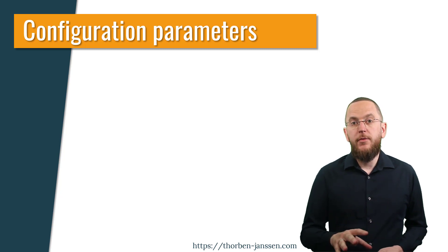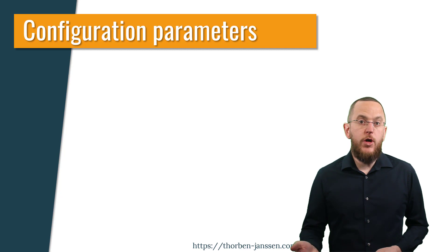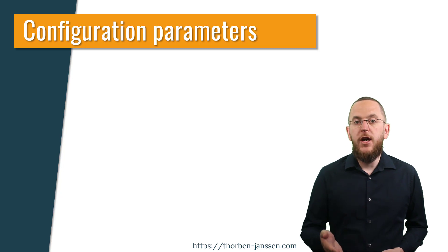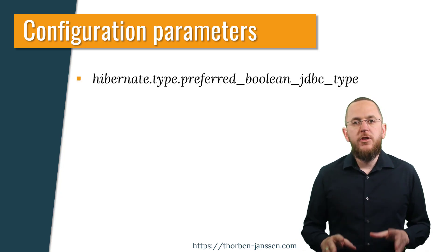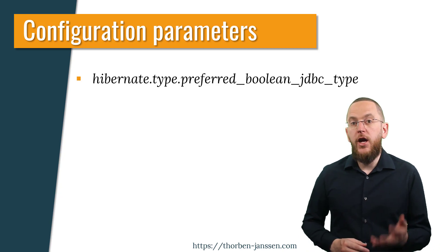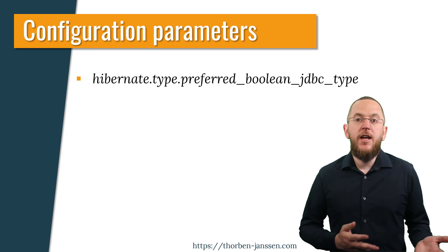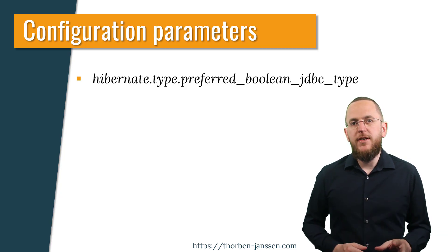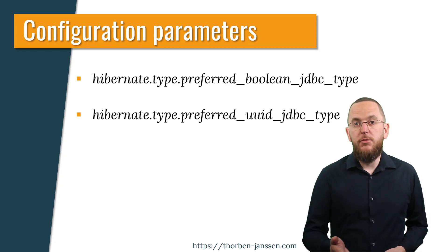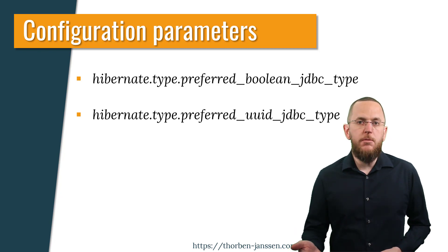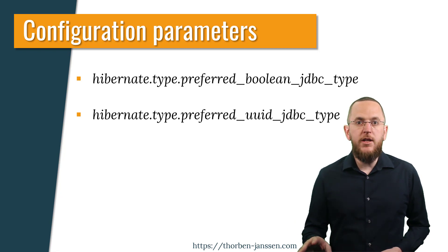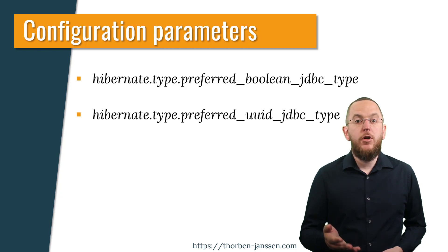You can use them in your persistence.xml configuration and either set them to a numerical JDBC type code or reference the name of a constant defined in org.hibernate.type.SqlTypes. The hibernate.type.preferredBooleanJDBCType sets the JDBC type code for attributes of type Boolean. By default, Hibernate gets this type mapping from the database-specific dialect. hibernate.type.preferredUUIDJDBCType sets the JDBC type code for attributes of type UUID. By default, these get mapped to org.hibernate.types.SqlTypes UUID, which represents the JDBC type code 3000.